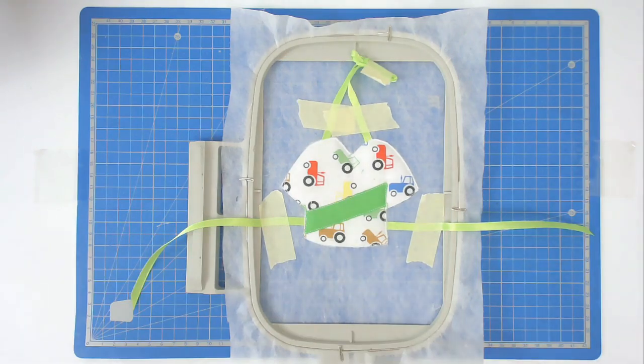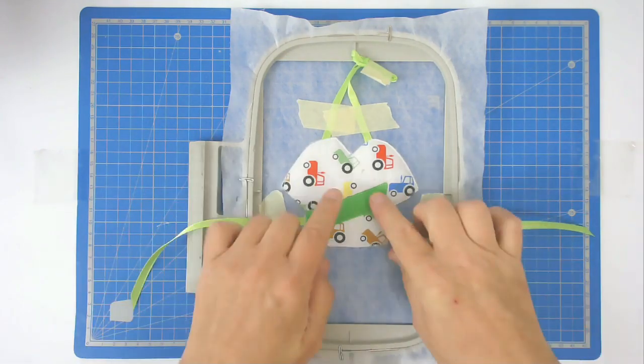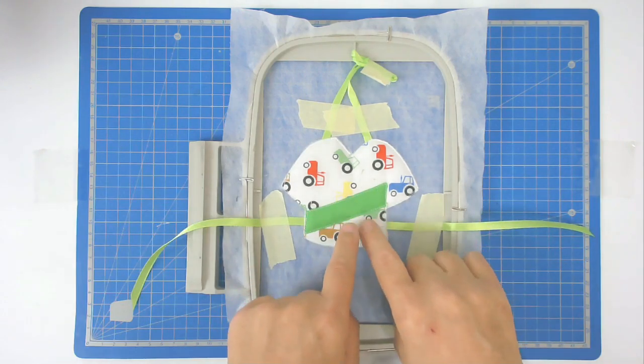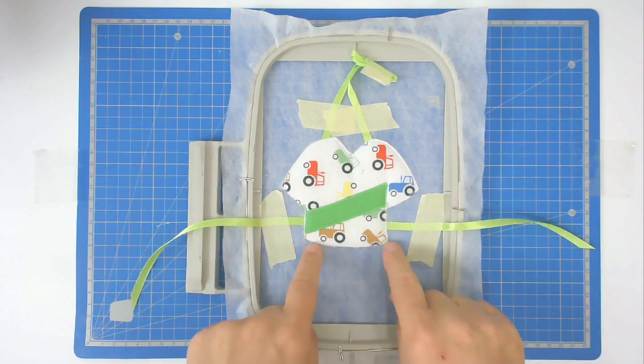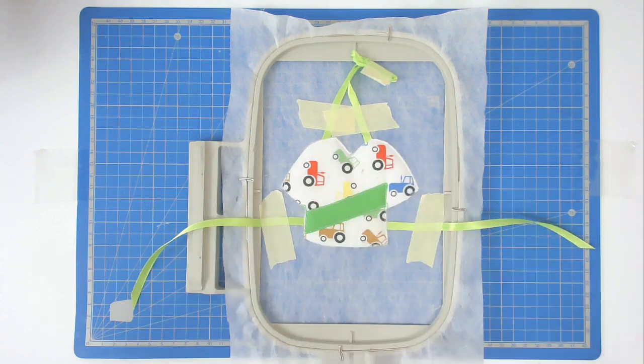You'll want to load a matching bobbin and thread into your machine now, because the next round, number six, is going to zigzag all the raw edges and then do the satin stitch finish around them as well.